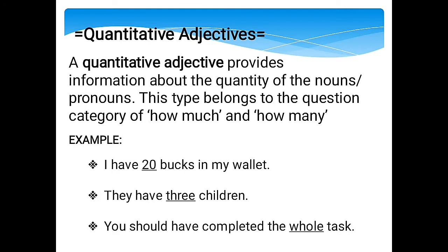The next type is quantitative adjectives. Quantitative adjectives provide information about the quantity of nouns or pronouns. This type belongs to the question category of how much and how many. For example, 'I have 20 bucks in my wallet' — 20 is our adjective. 'They have 3 children' — 3 is our adjective. 'You should have completed the whole task' — whole is our adjective.